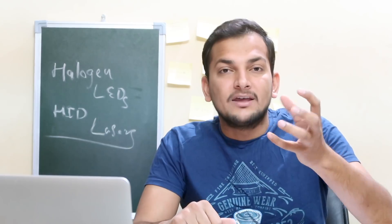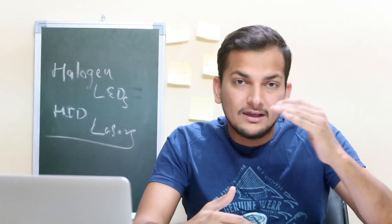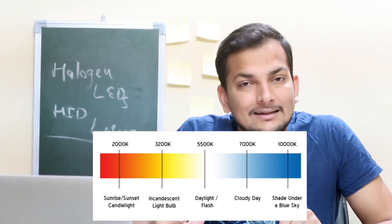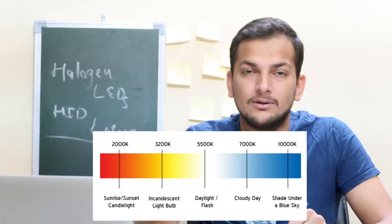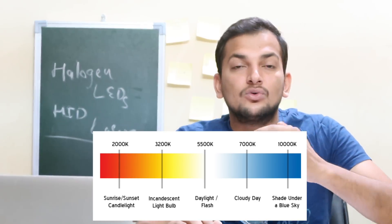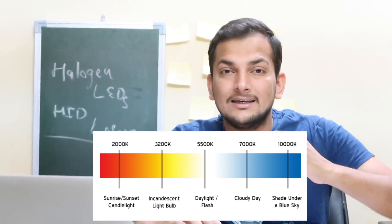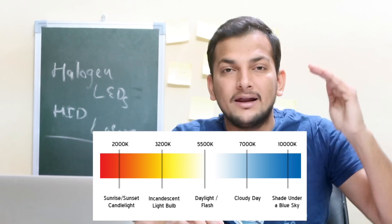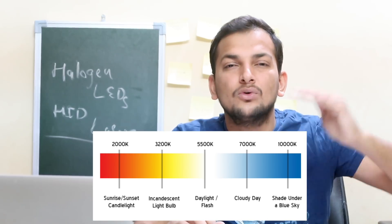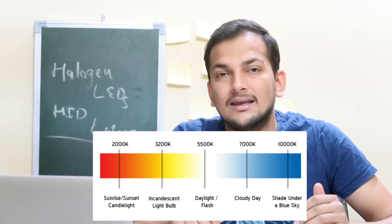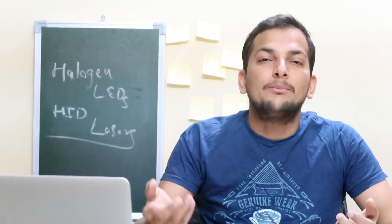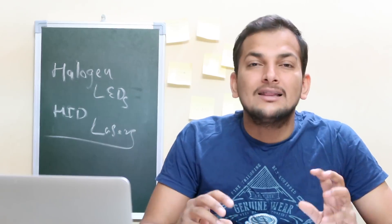When a light looks a little warm or yellow, it has a lower color temperature — around 3000K. We call the whiter, cooler-looking light a higher color temperature, like 5000K or 6000K.